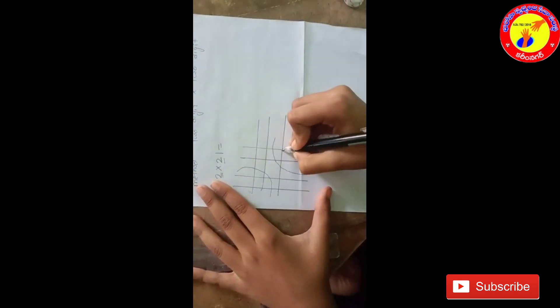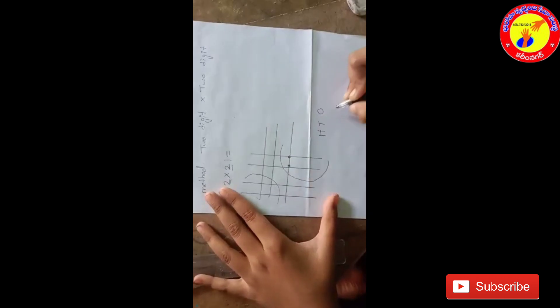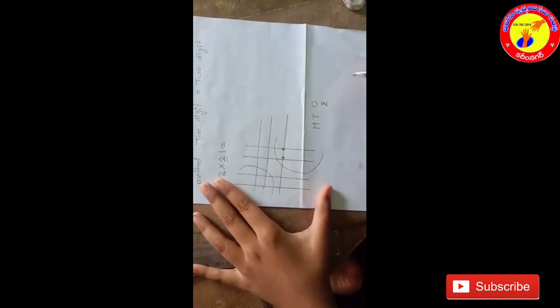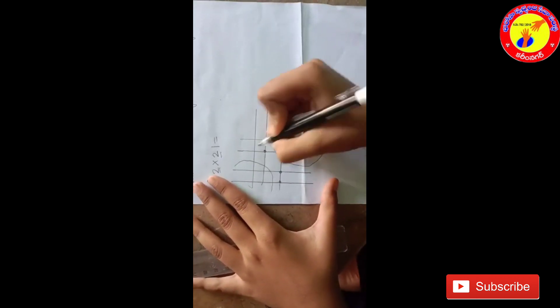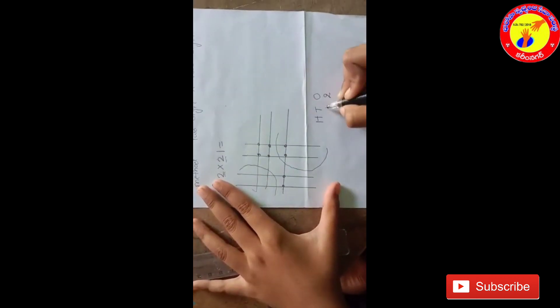Let's count the dots. 1, 2. We have to write 2. Next, count tens. 1, 2, 3, 4, 5, 6. Write 6.